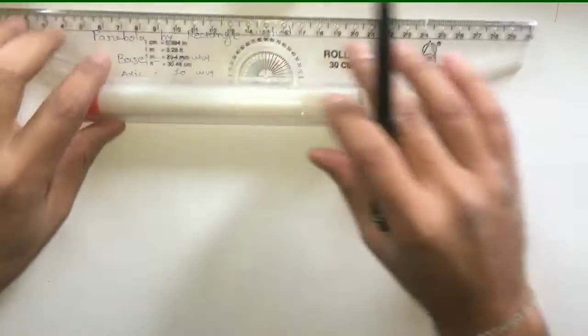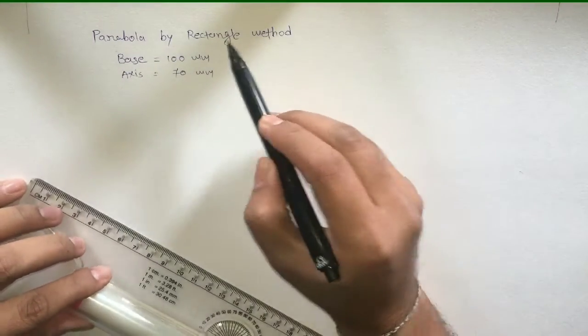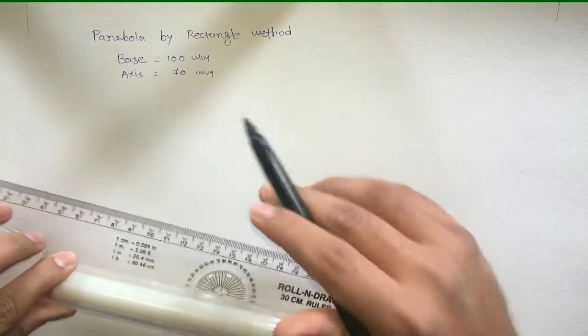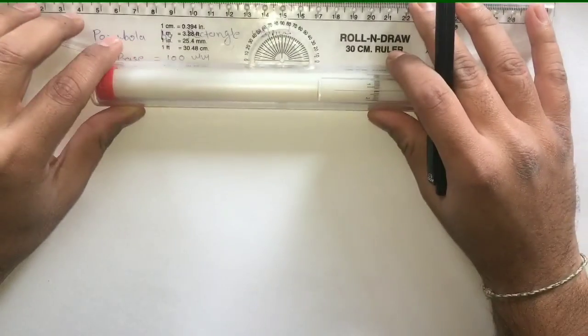So, name of the method is rectangle method. First draw a rectangle of 100 by 70 mm.